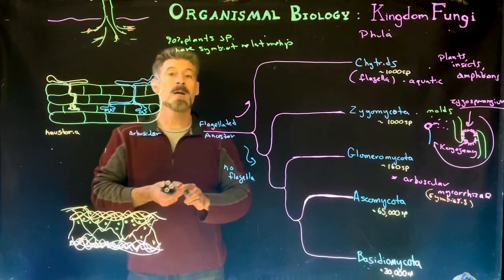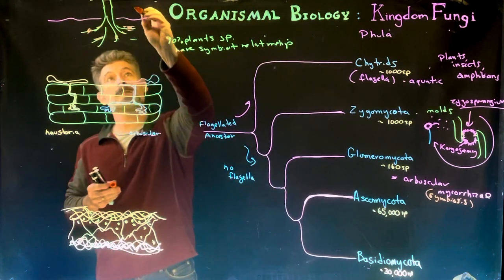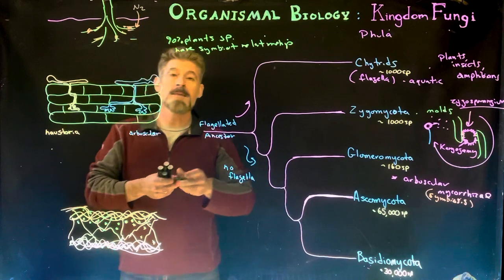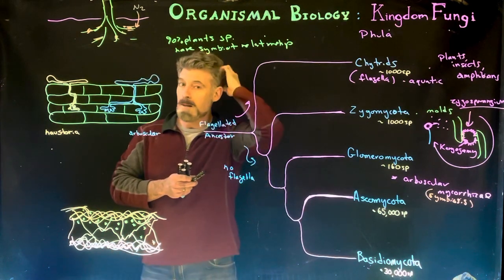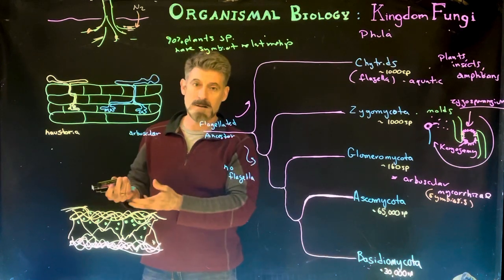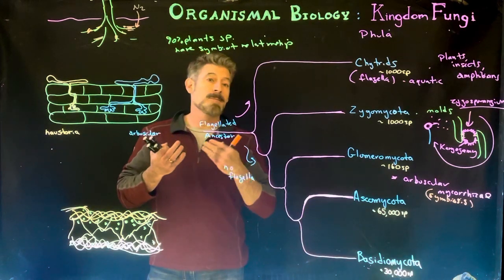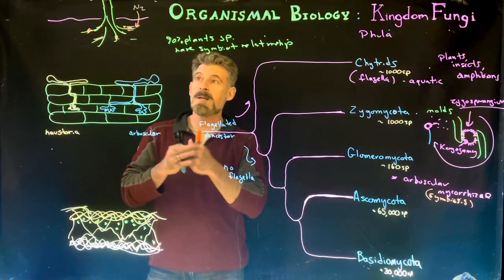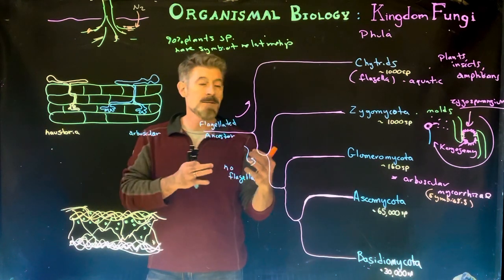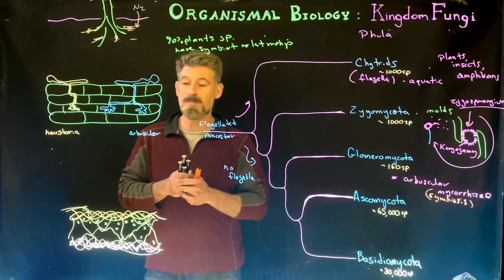That symbiosis often results in helping pull nutrients, specifically a lot of times nitrogen, out of the atmosphere. And then the association with the plant root allows the nitrogen to be put into an organic form that the plants can then use as part of their own molecules that require nitrogen. So this nitrogen fixation process and the transfer of other sorts of nutrients and minerals between the plant and the fungi is incredibly important for most species of plants.